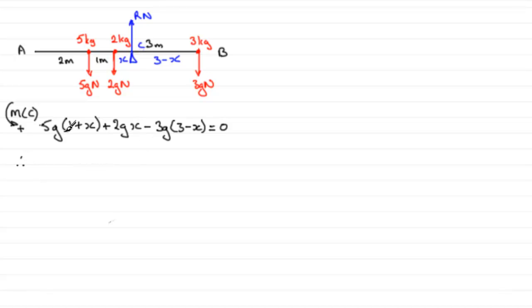If we were to expand this bracket now and solve this equation for X, we'd end up with 5G plus 5GX plus 2GX minus 9G and then plus 3GX. And that equals 0. If we group up the terms in GX, we've got 5GX plus 2GX plus 3GX, that's 10GX. And then here we've got 5G minus 9G, which is minus 4G. If we were to add that to both sides, we'd end up with that equaling 4G. The G's cancel and so if we divide both sides by 10, we end up with X equaling 4 divided by 10 or 0.4.